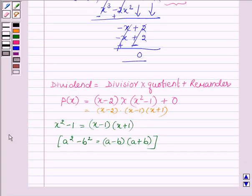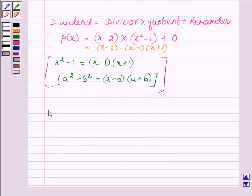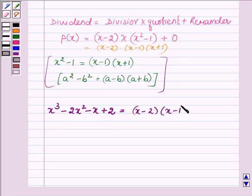On factorizing the given polynomial p(x), which is x cubed minus 2x squared minus x plus 2, we get the factors as x minus 2 into x minus 1 into x plus 1.